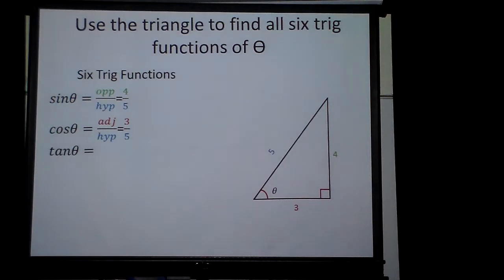Now we have tangent. Tangent is opposite over adjacent. So I'm going to have 4 over 3.